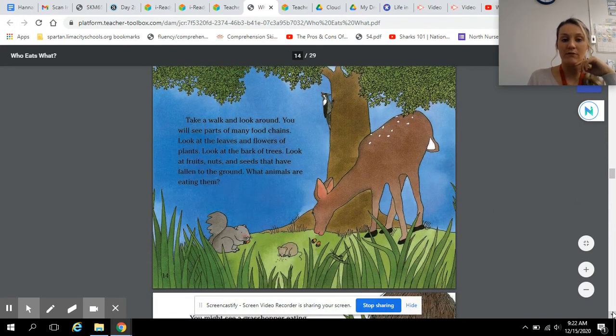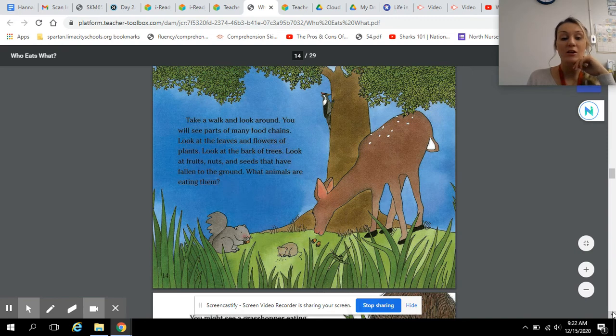Take a walk and look around. You will see parts of many food chains. Look at the leaves and flowers of plants. Look at the bark of trees. Look at fruits, nuts, and seeds that have fallen to the ground. What animals are eating them?